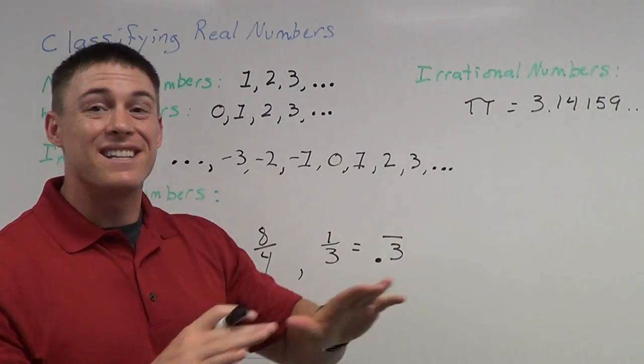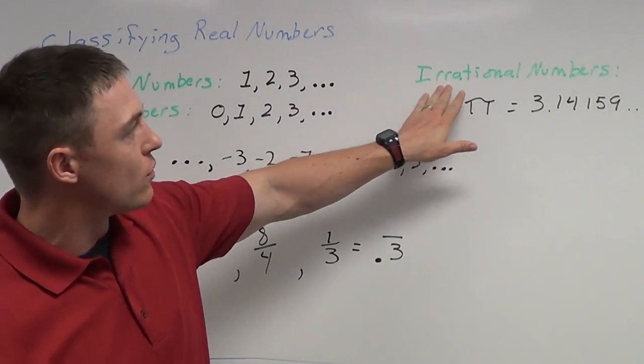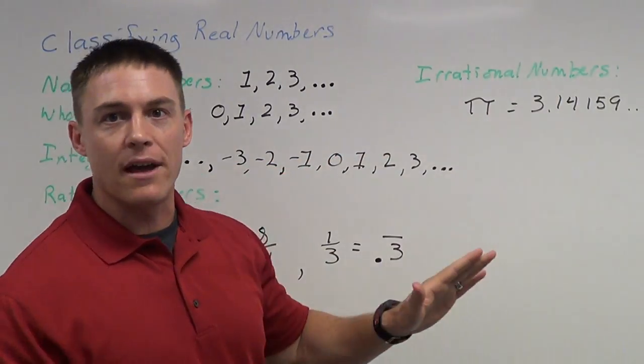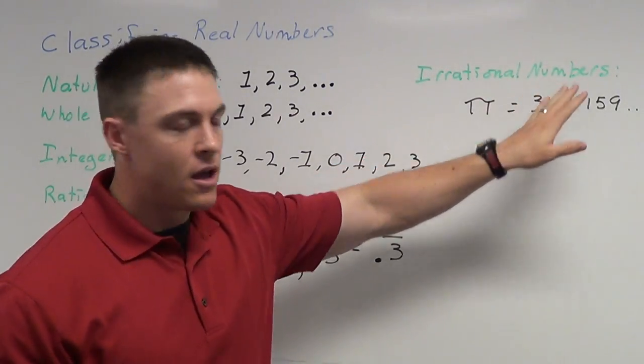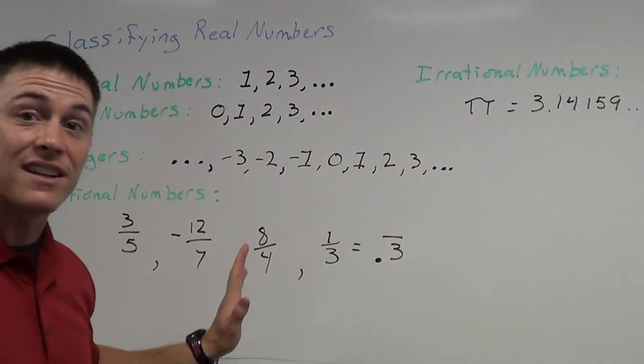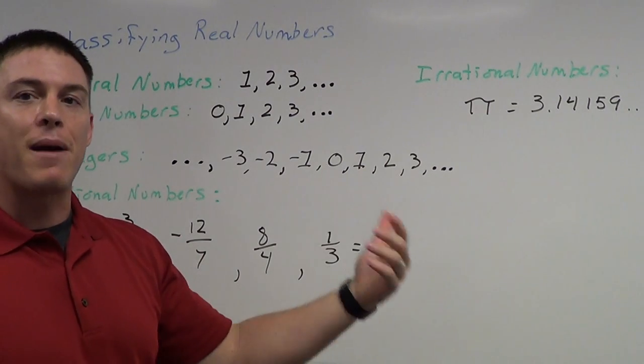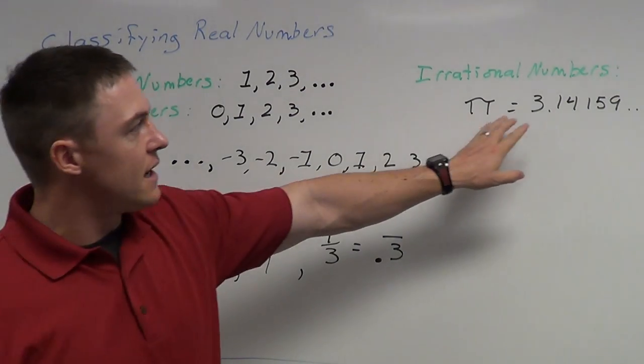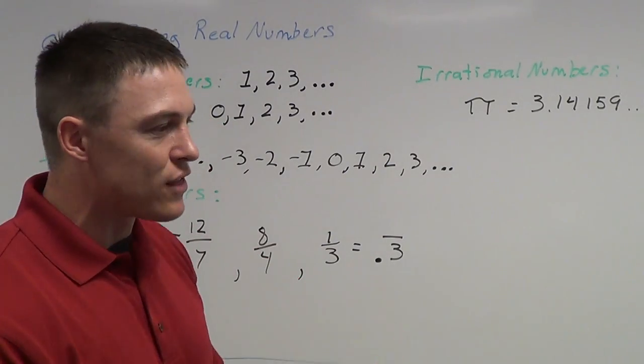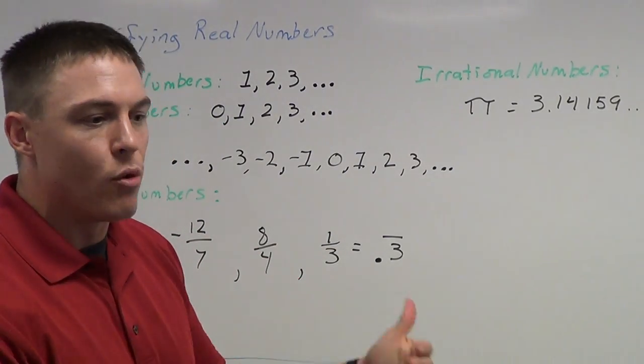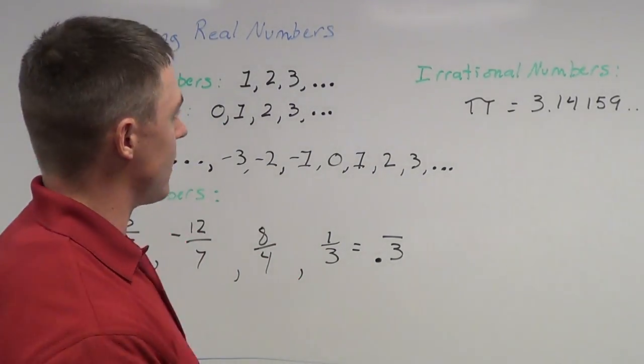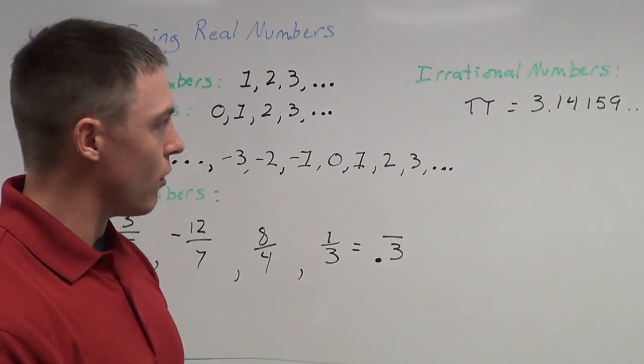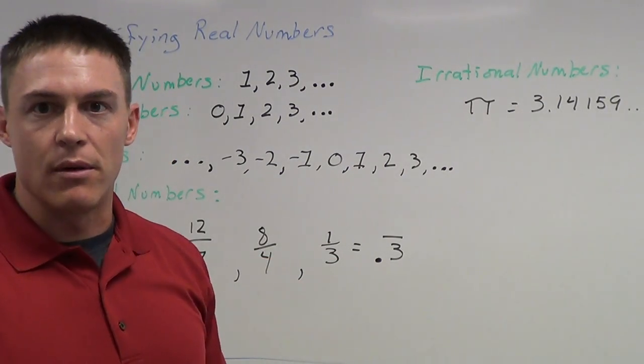But there's no pattern to any of these numbers. So for pi, since there is no pattern, we call that an irrational number. No pattern, irrational number. Whereas point three repeating, yes, it does go on forever, but there's a pattern to it, so that makes it a rational number. Pi is your irrational number. Any number that you can think of that has no pattern to it is going to be an irrational number. Pi is just the more famous of the irrational numbers that we have.